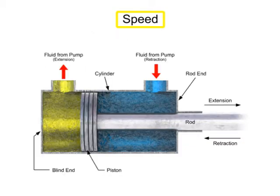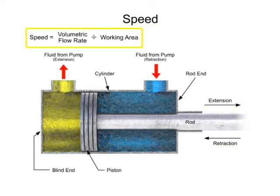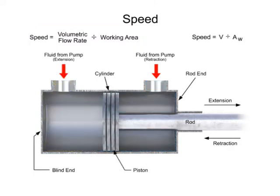The speed at which the piston extends and retracts is calculated using the volumetric flow rate divided by the working area for the incoming fluid. Since each side of the cylinder has a different working area, each side experiences a different speed. Let's assume that the volumetric flow rate is equal for each inlet, meaning fluid enters each end of the cylinder at the same speed.